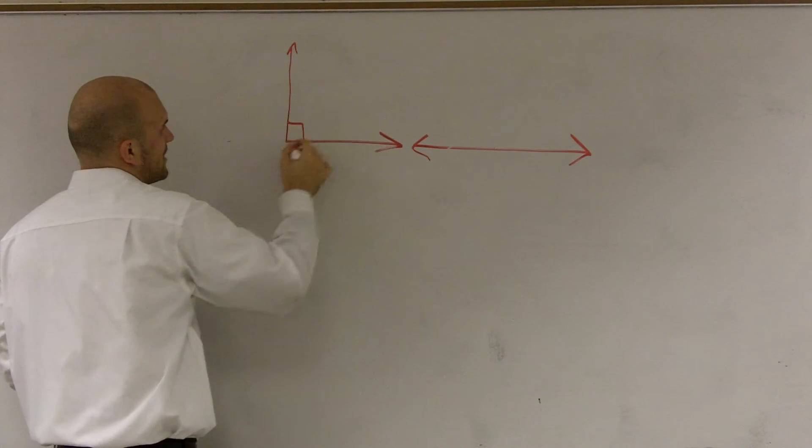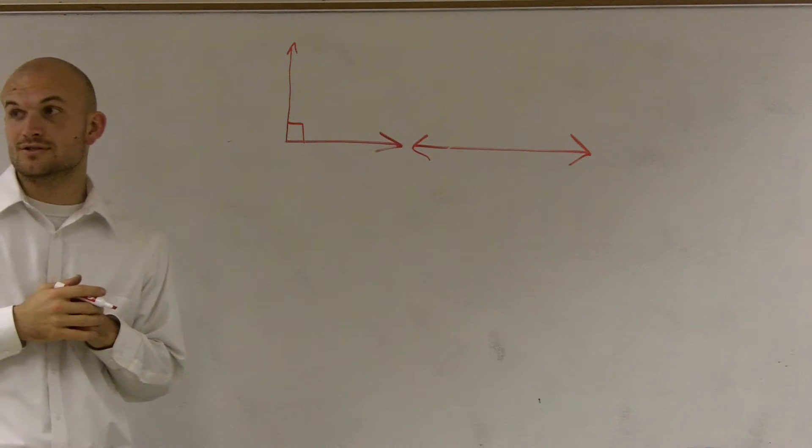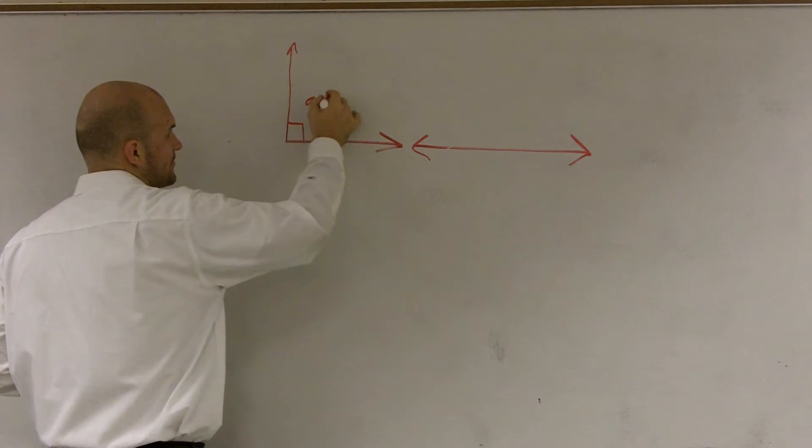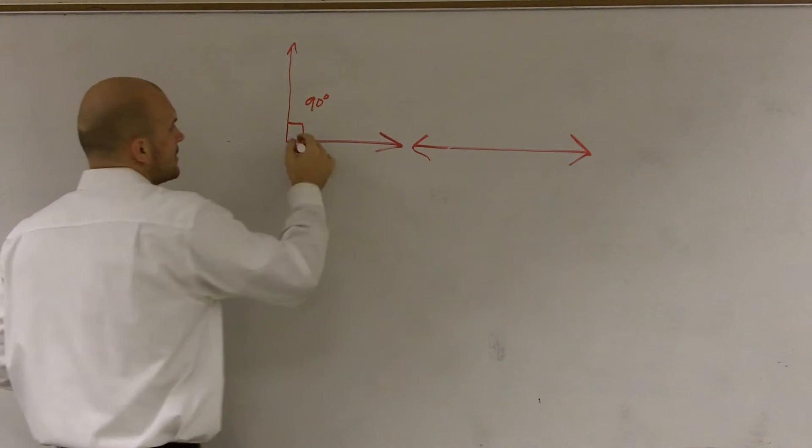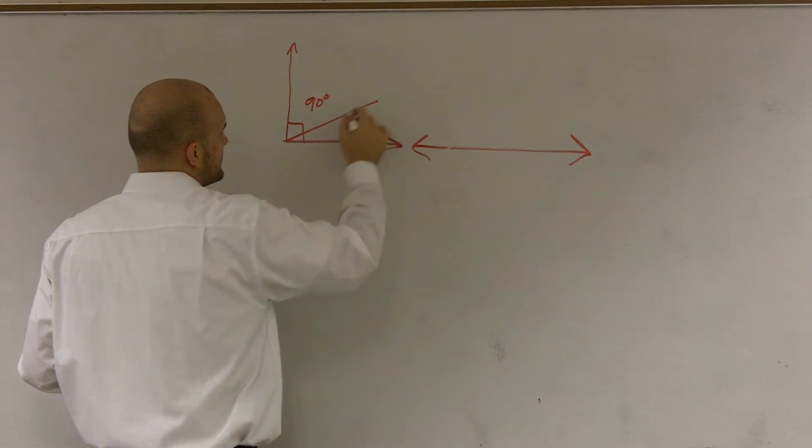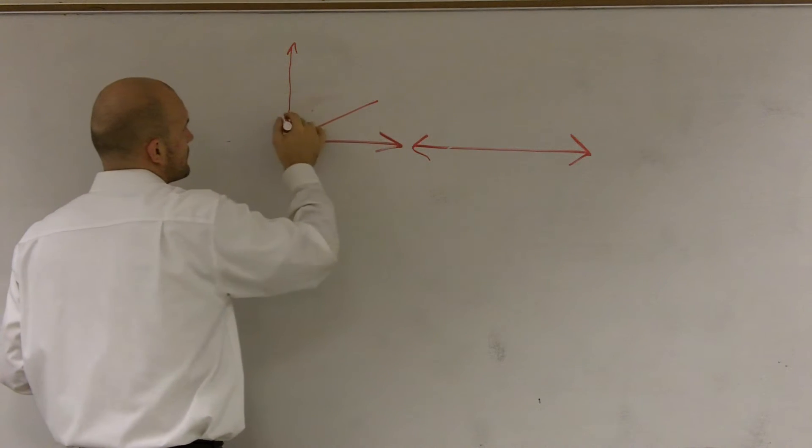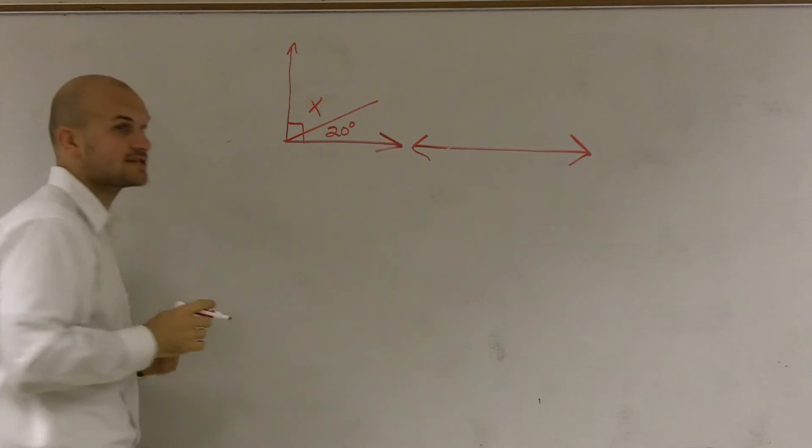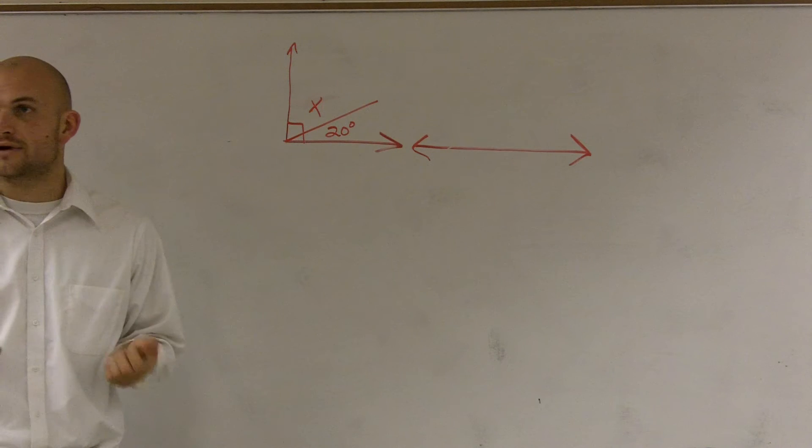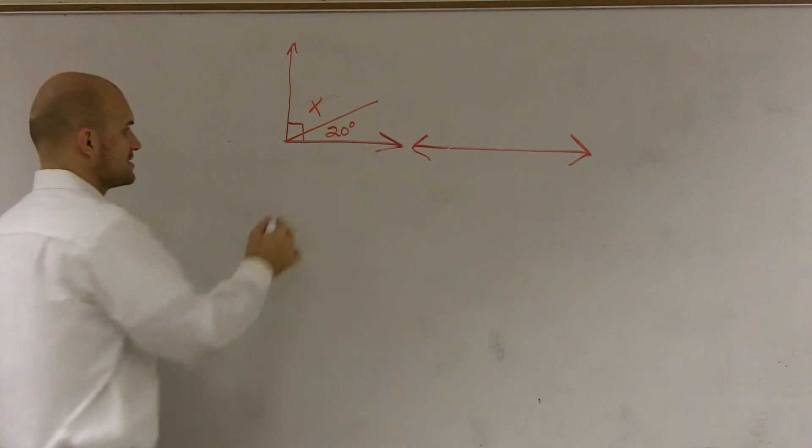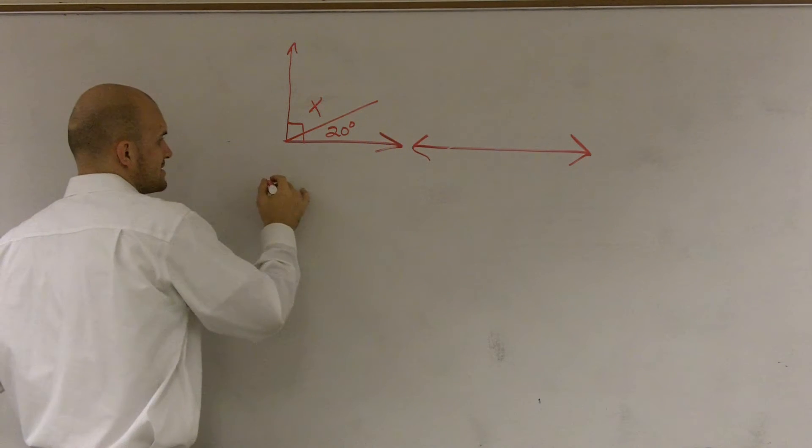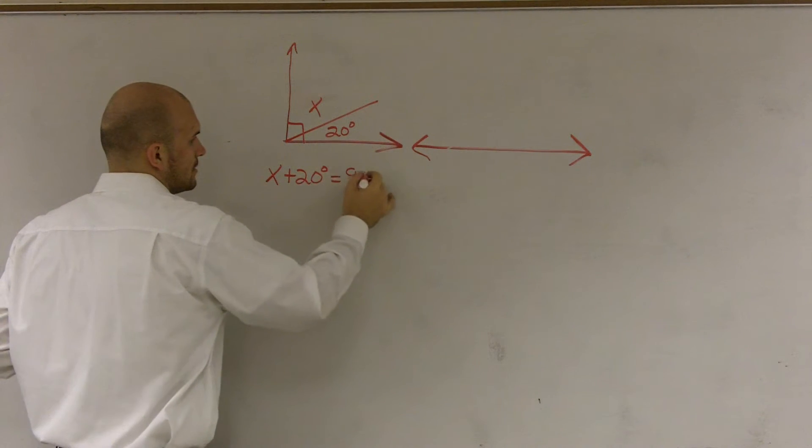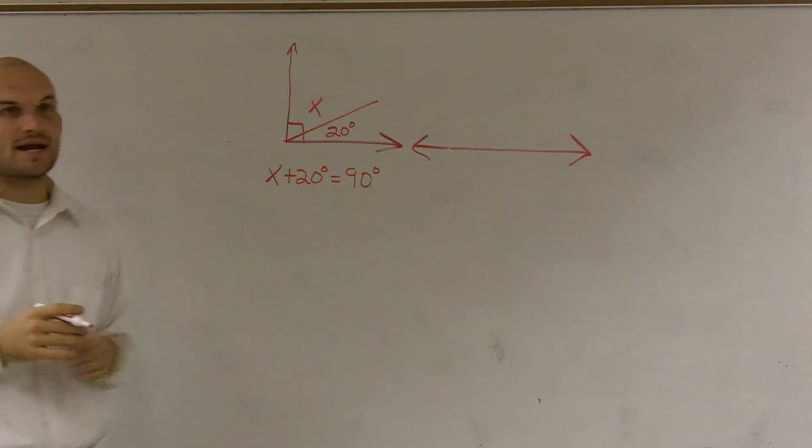So if you guys remember, we had a 90 degree angle, and 90 degree angles, we said equal, or sorry, right angle equaled 90 degrees. And so what we said was, if one of those angles was 20 degrees and the other was x, we could write an expression. This was like the basics of geometry. We could say that x plus 20 degrees equaled 90, because that was a right angle.